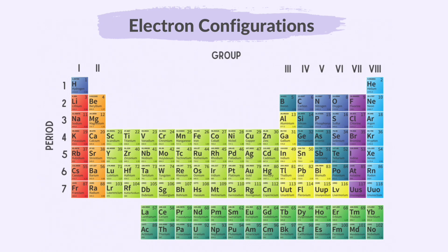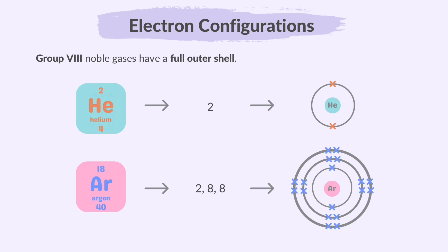Here's a periodic table. Notice that it's organized into columns and rows. The columns are numbered from 1 to 8 using Roman numerals, and we call them groups. The rows are numbered from 1 to 7, and we call them periods. Group 8, known as the noble gases, have full outer shells. Let's look at two examples from Group 8: helium and argon. The number of electrons in these elements fills up their electron shells to the maximum, making them highly stable.